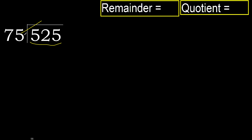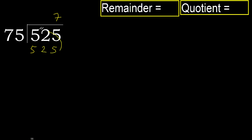75 multiplied by 9 is 675, which is greater. 75 multiplied by 8 is also greater. 75 multiplied by 7 is 525, which is not greater. Okay.